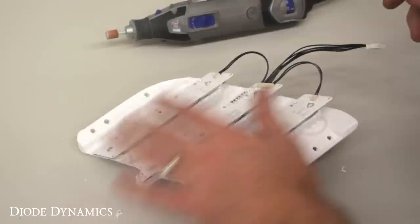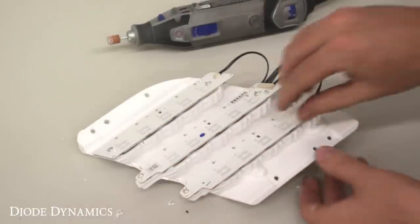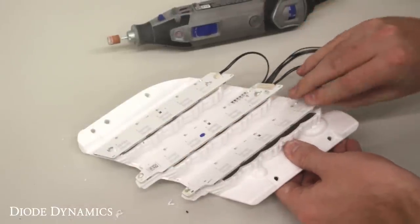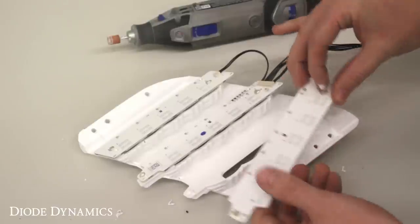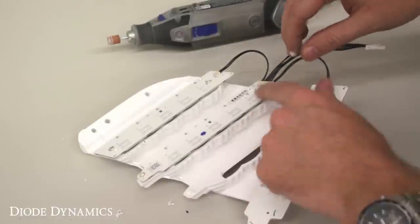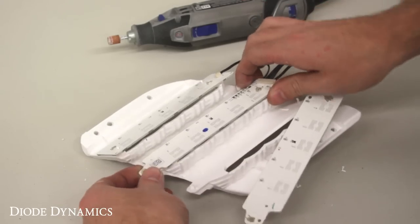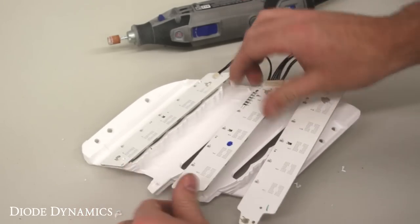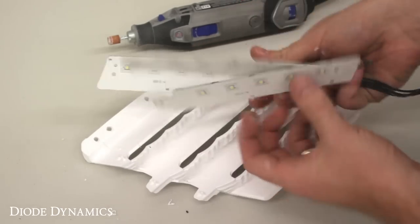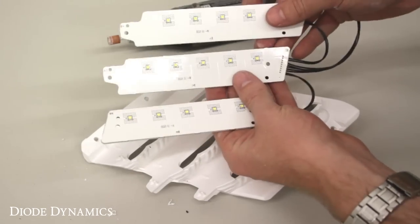Now once you've shaved all six of those plastic rivets off, the boards should lift pretty easily directly out. Now if they don't, it means you've missed a little bit of plastic, so just go over them once more. But that's all that's holding them in is just those plastic pieces. And you'll see there's the factory panels that we're going to be replacing.